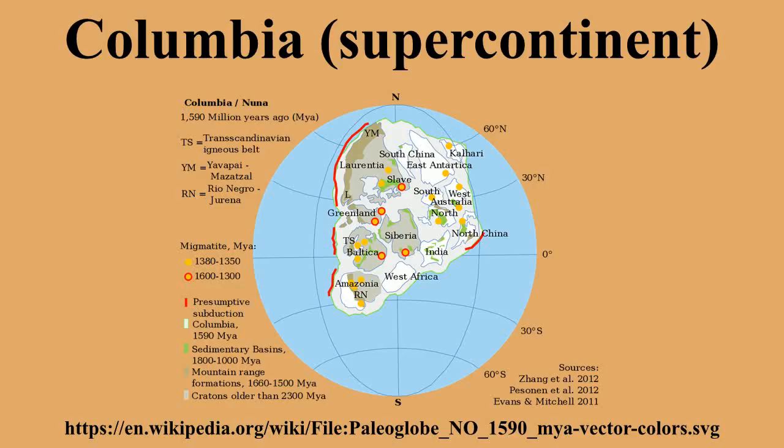Columbia, also known as Nuna and Hudsonland, was one of Earth's ancient supercontinents. It was first proposed by Rajas and Santosh in 2002 and is thought to have existed approximately 2.5 to 1.6 billion years ago in the Paleoproterozoic era.